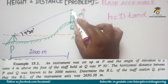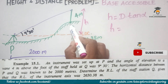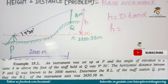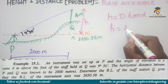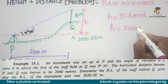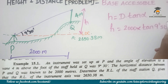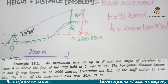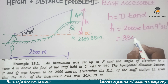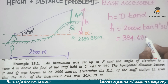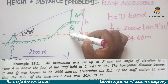Looking at the angle, the height h forms a right-angle triangle. So h is equal to d times tan(alpha). Therefore, h equals 2000 times tan(9 degrees 30 minutes), which gives us 334.68 meters. This is the height of the point with respect to the line of collimation.